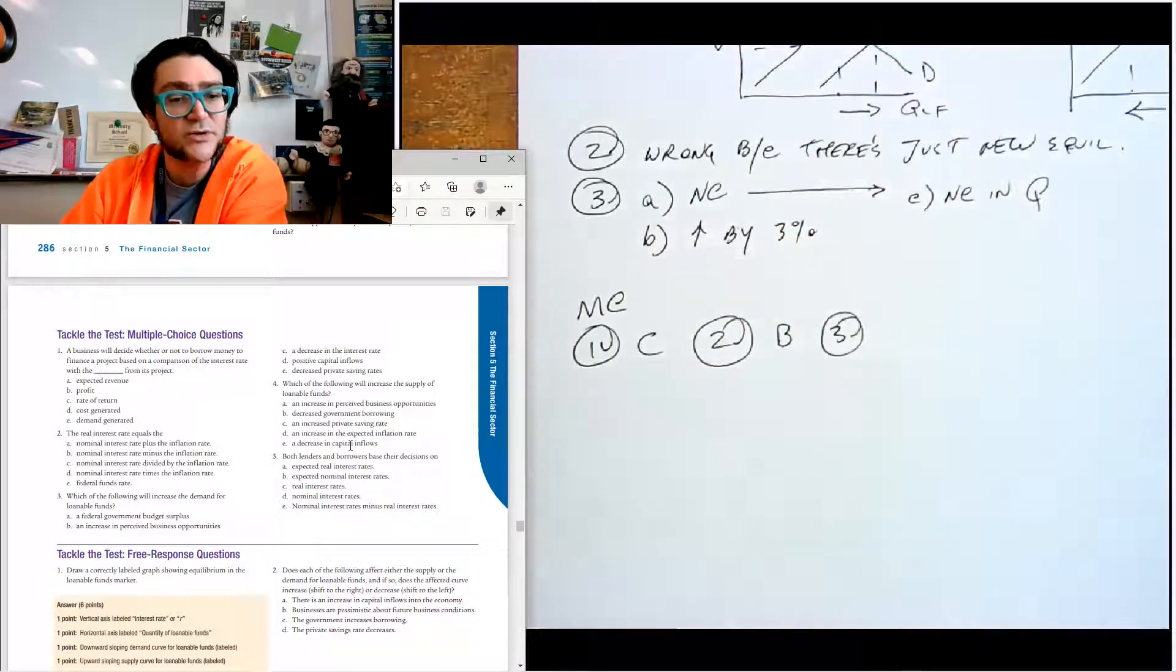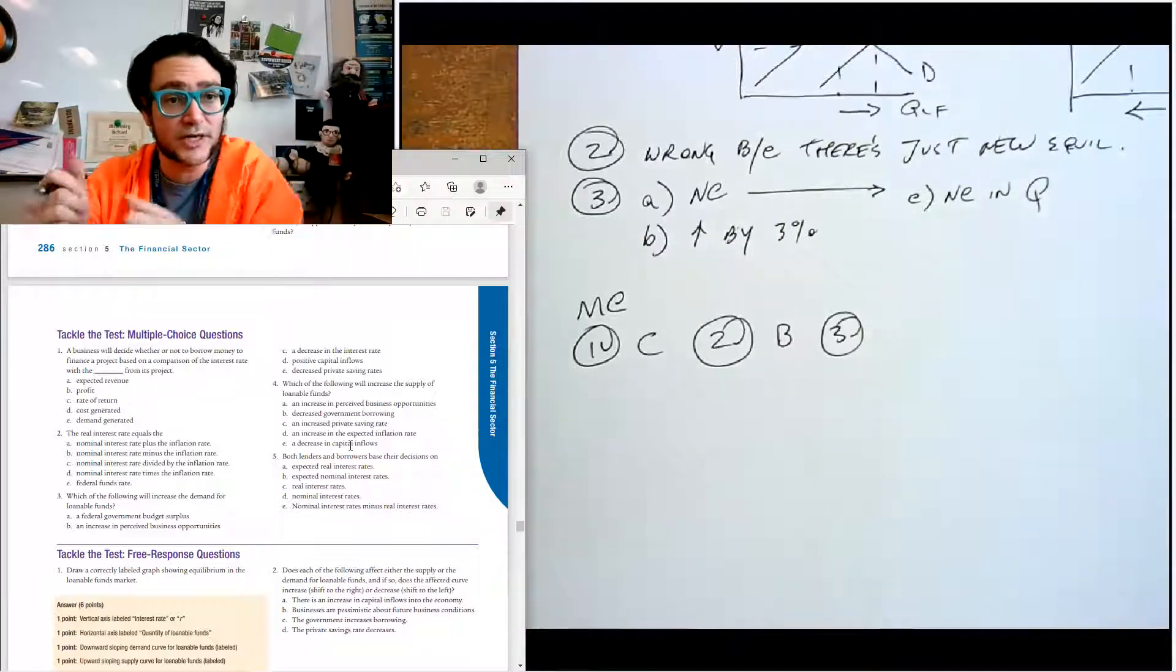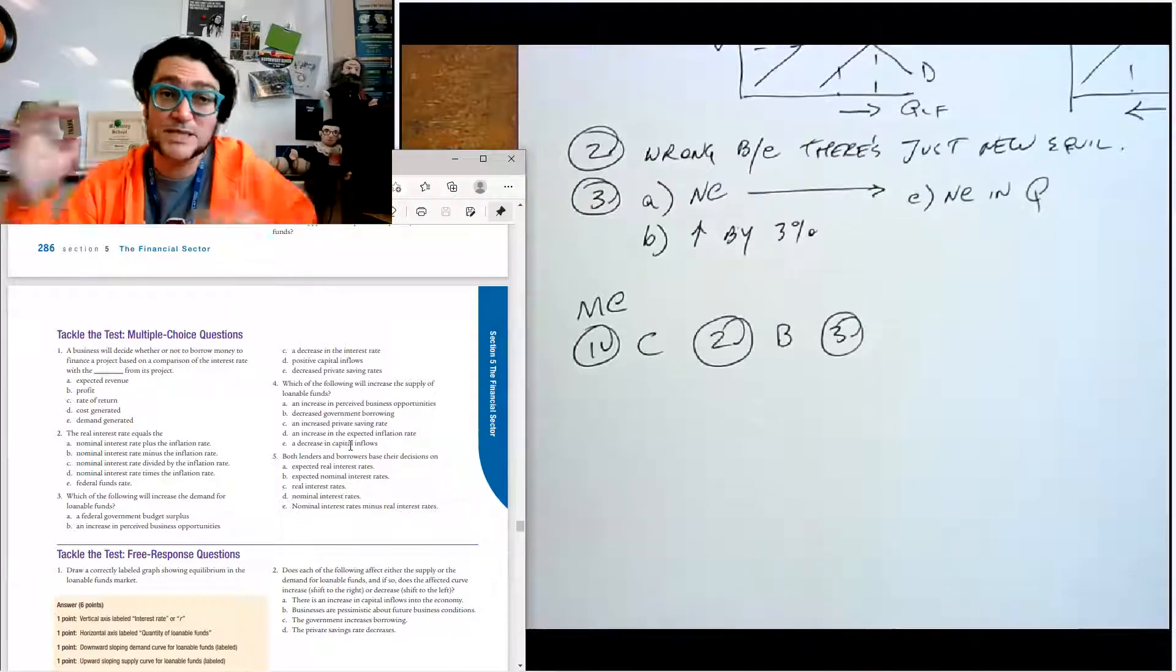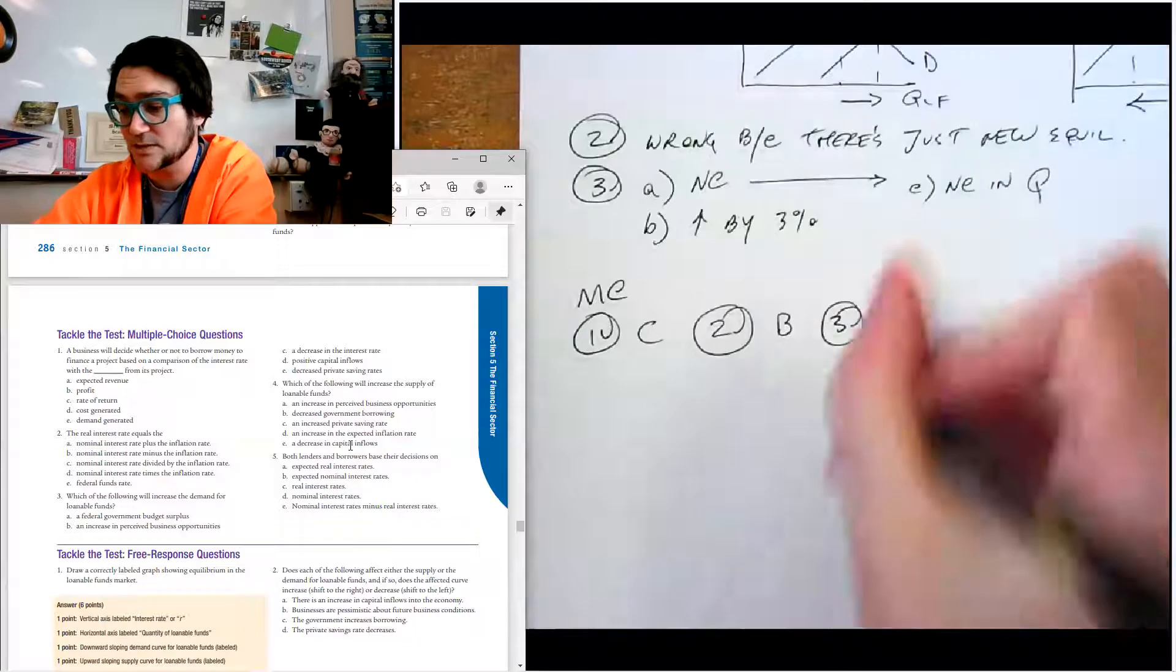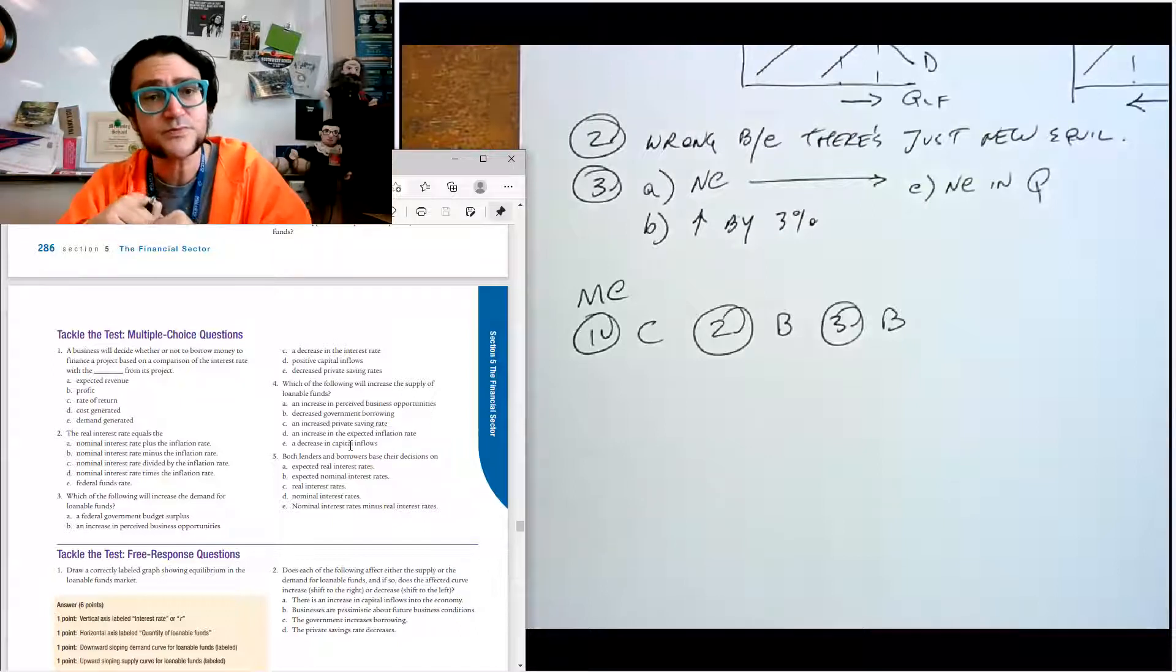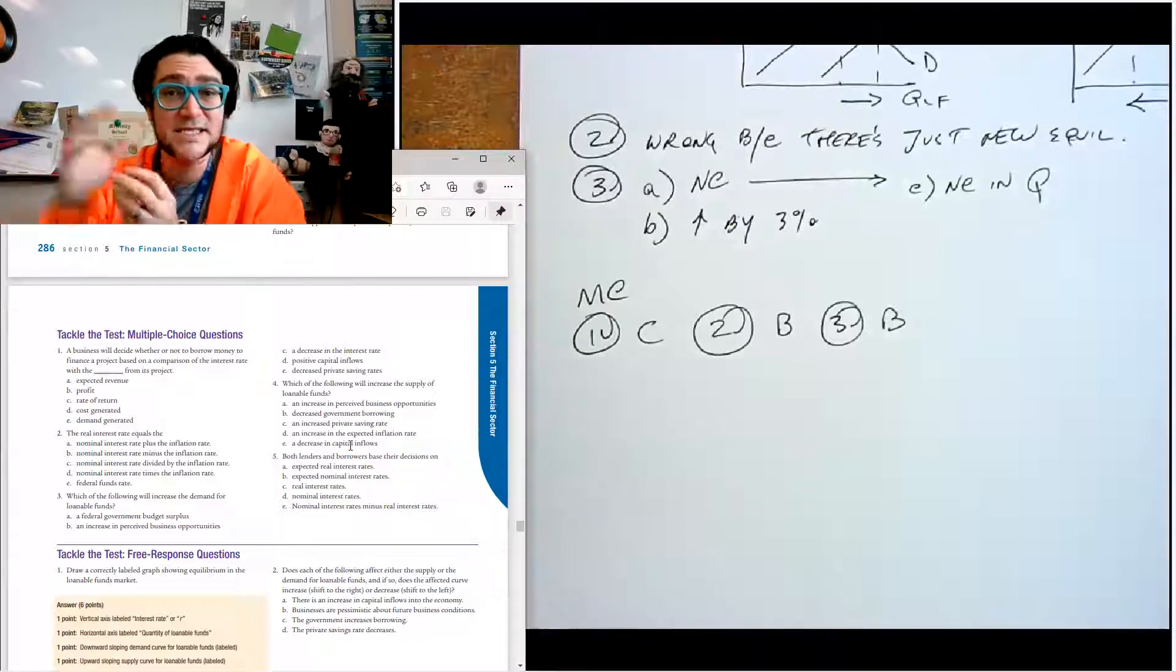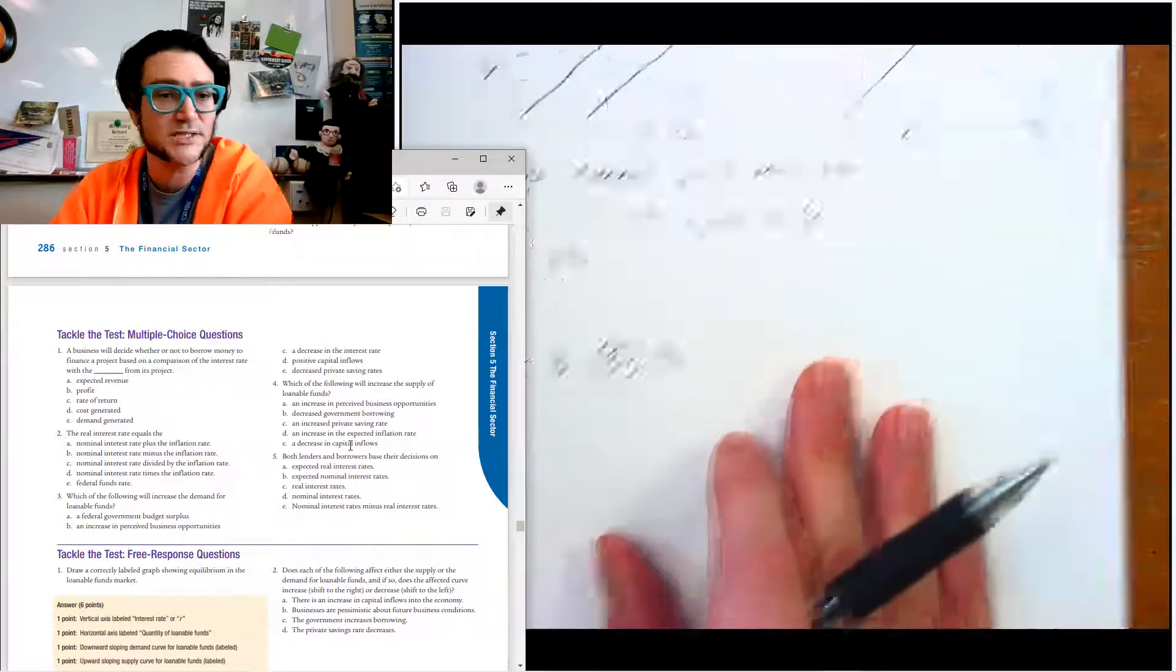Number three, which of the following will increase the demand for loanable funds? So the federal government budget surplus, now that decreases, because government borrowing can boost the demand because they're literally borrowing more. An increase in perceived business opportunities - that would increase the demand for borrowing because if businesses are looking around going the economy's on fire, I want to get bigger, then they're going to want to borrow more money. So we know the answer is B. A decrease in the interest rate would just move you along the curve. Positive capital inflows, that's a supply shifter. Decreased private savings rates - savings is the supply, so if there's a change in the savings rates it's not going to affect the demand for money.